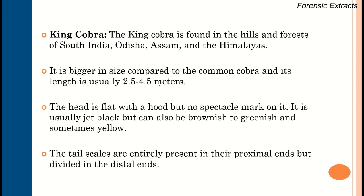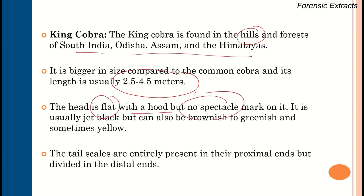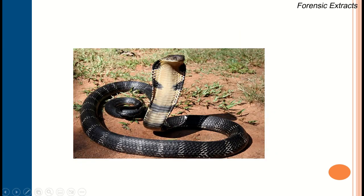The second type is the king cobra, found in hilly areas like South India, Odisha, Assam, and the Himalayas. Its length is 2.5 to 4.5 meters. The head is flat with a hood but no spectacle — no two round marks as seen in the common cobra. The king cobra is the snake that eats smaller snakes.